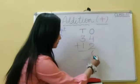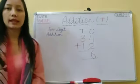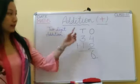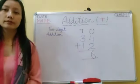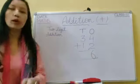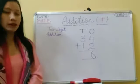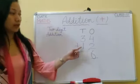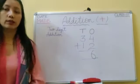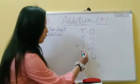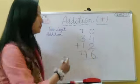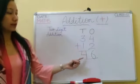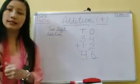Now let's add the tens column. Three plus one is equal to four. So thirty-four plus twelve is equal to forty-six.